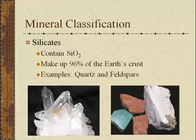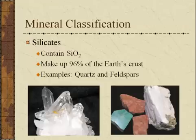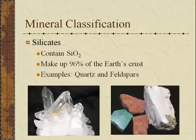When we classify minerals, there are several major groupings. The first we talk about are the silicates. Silicates contain a silicon atom with two oxygen atoms — SiO2 is the silicate group. 96% of the Earth's crust is made out of silicate minerals. The most common examples are quartz and feldspars, both of which can come in a variety of different colors.